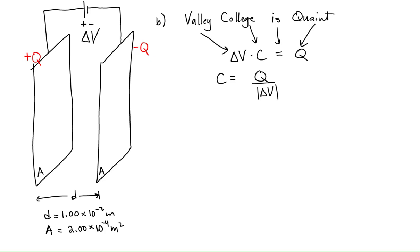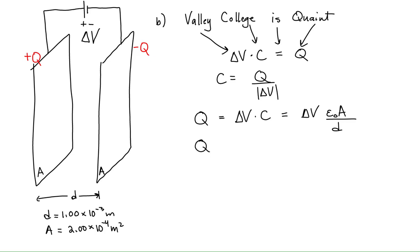Using 'Valley College is quaint,' the charge equals the potential difference times the capacitance. We calculated capacitance in part A, but it's always good practice not to use a previously rounded answer for a new calculation, because every time you round and reuse that result you introduce a little error. So instead of using the rounded 1.77 times 10 to the minus 12 farads, I'll use the exact algebraic result to minimize rounding errors.